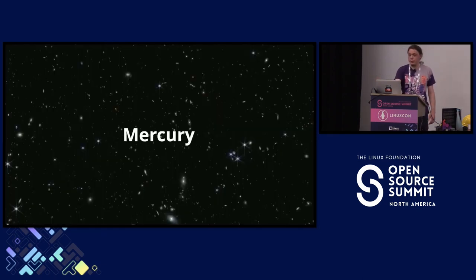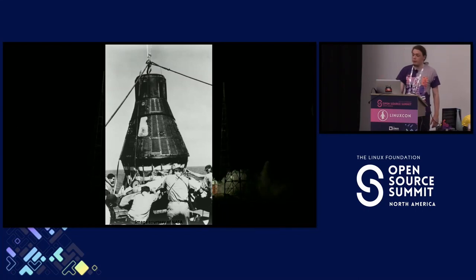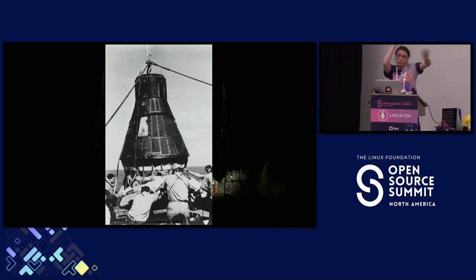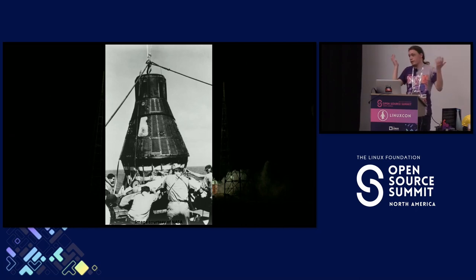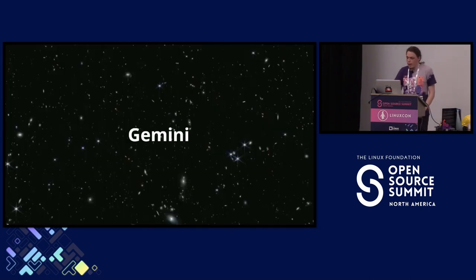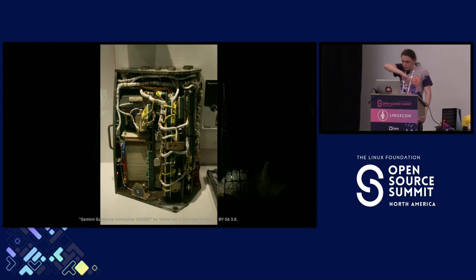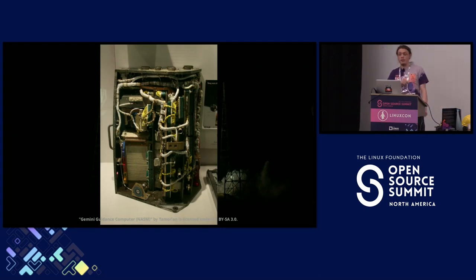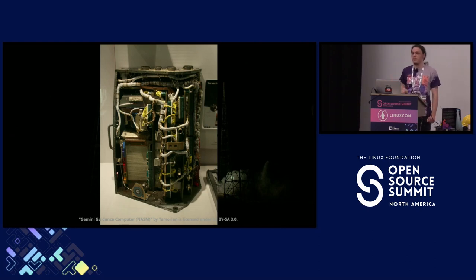Let's do a brief summary of computers in manned spaceflight, starting with Mercury. Mercury didn't have a computer. It was basically remote control from the ground, aside from some attitude adjustment subsystems. All of the re-entry math was calculated on the ground. The report doesn't have much to say about it, so we're not going to talk about it. On to Gemini.